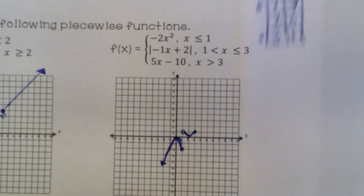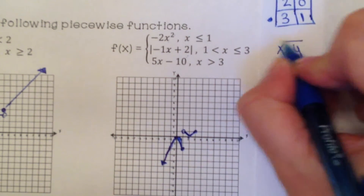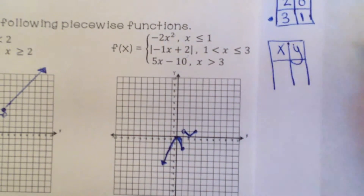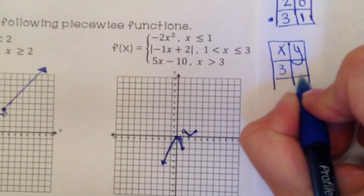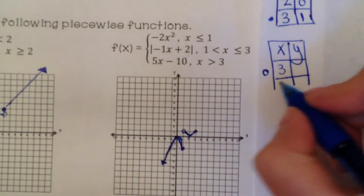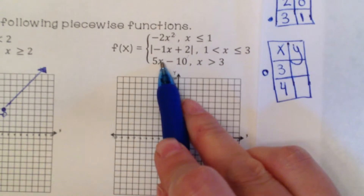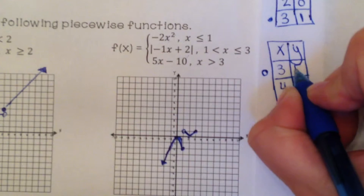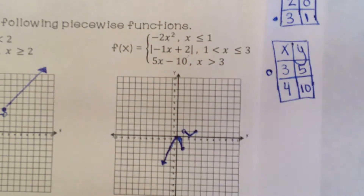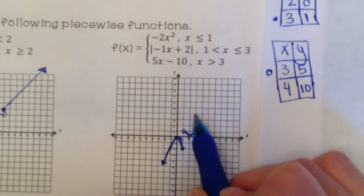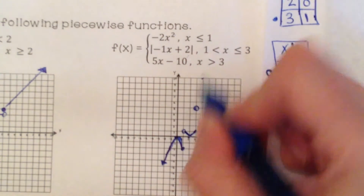The last piece is f of x equals 5x minus 10, which is linear — a straight line. It applies for x values strictly greater than 3, so we have an open circle at x equals 3. Plugging in 3: 5 times 3 is 15, minus 10 gives 5. Plugging in 4: 5 times 4 is 20, minus 10 is 10. We graph an open circle at (3, 5) and the point (4, 10), with the line continuing upward.